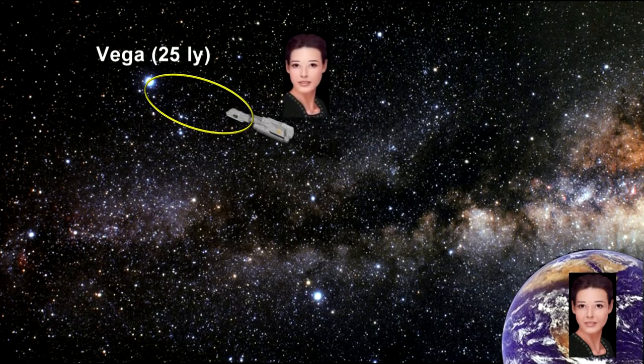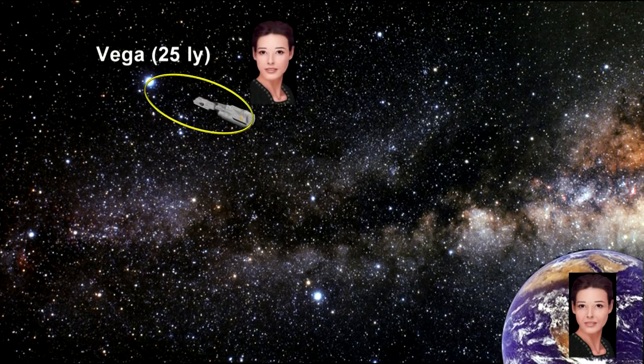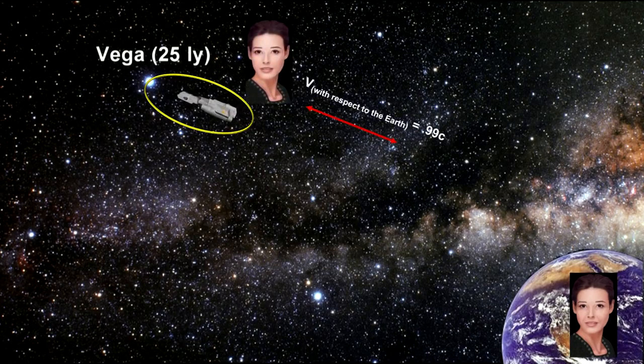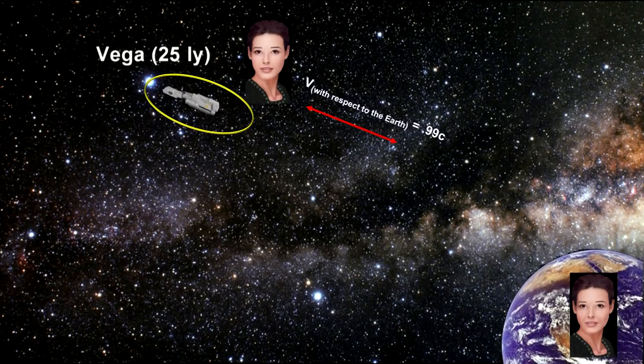The key interval is at the halfway point. As the spaceship approaches Vega, it decelerates to a stop and then re-accelerates back to the Earth. The traveling twin finds that she is in a gravitational field.